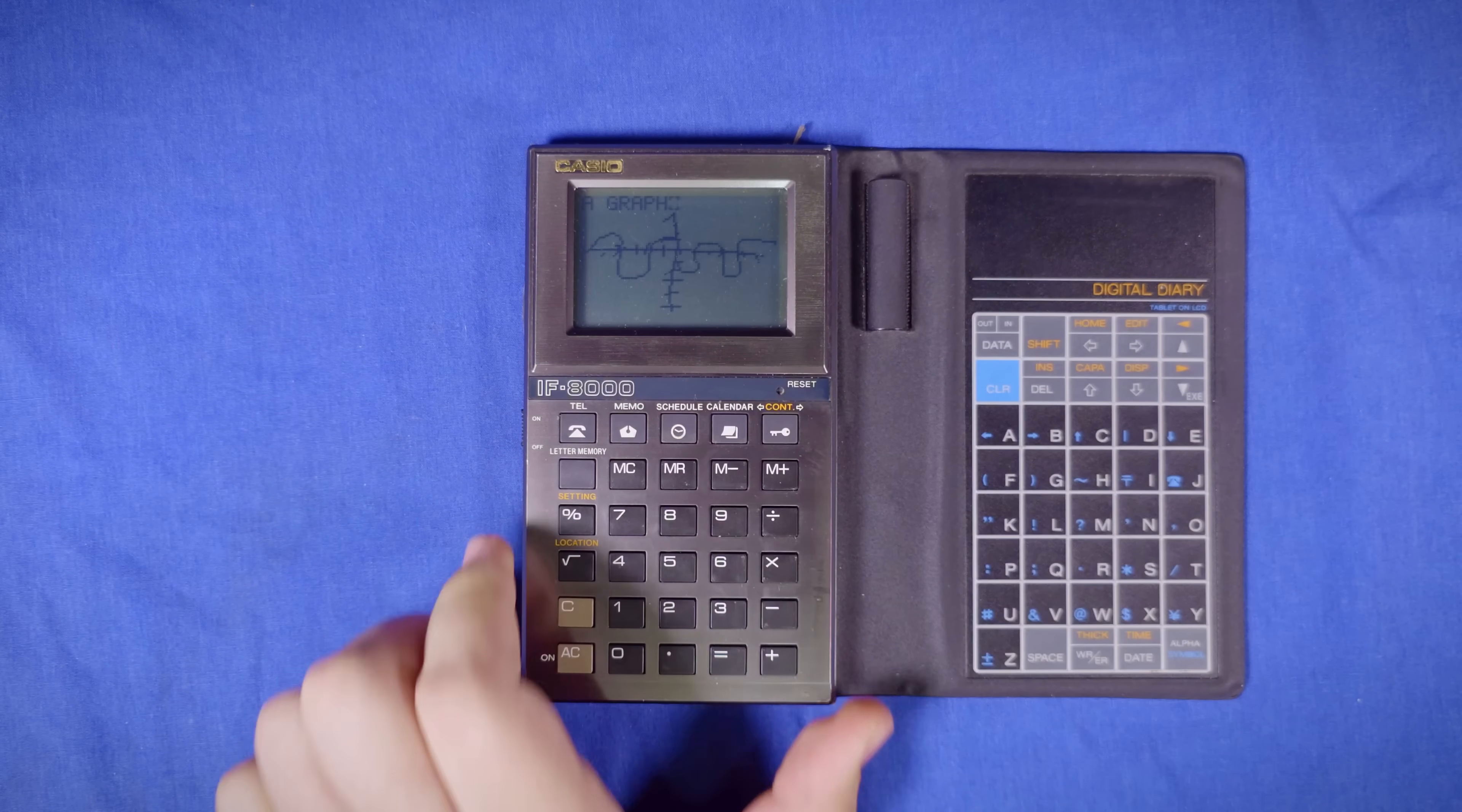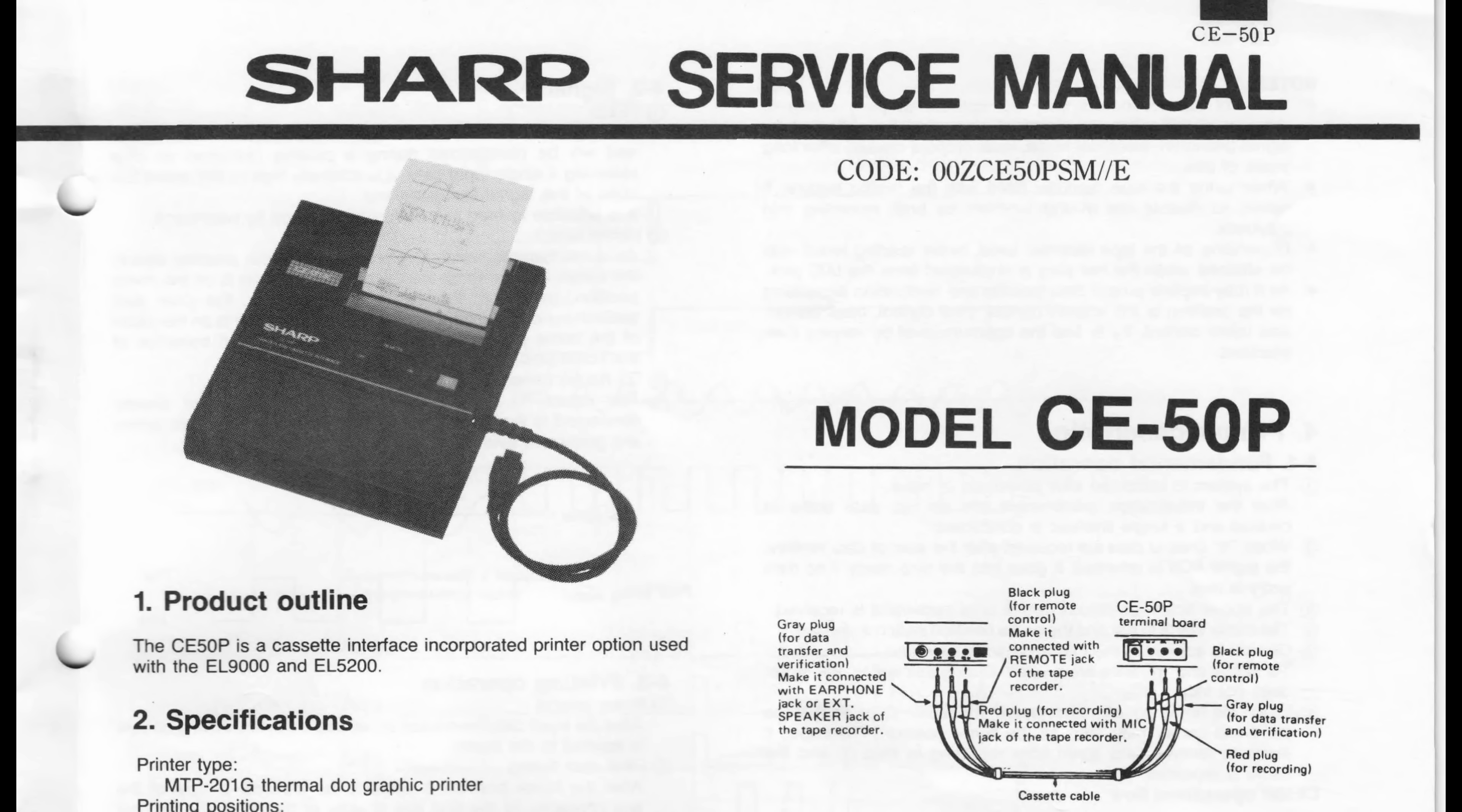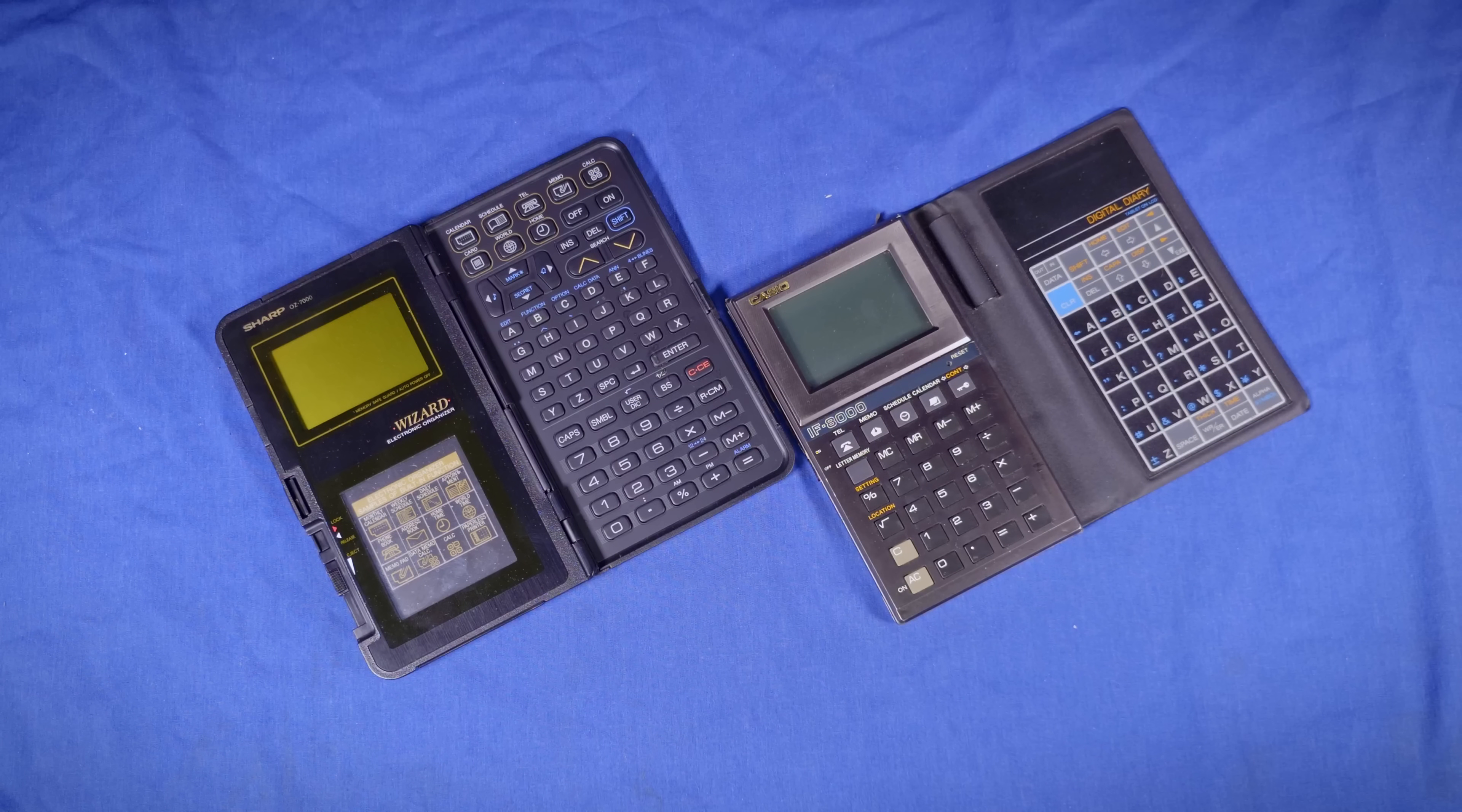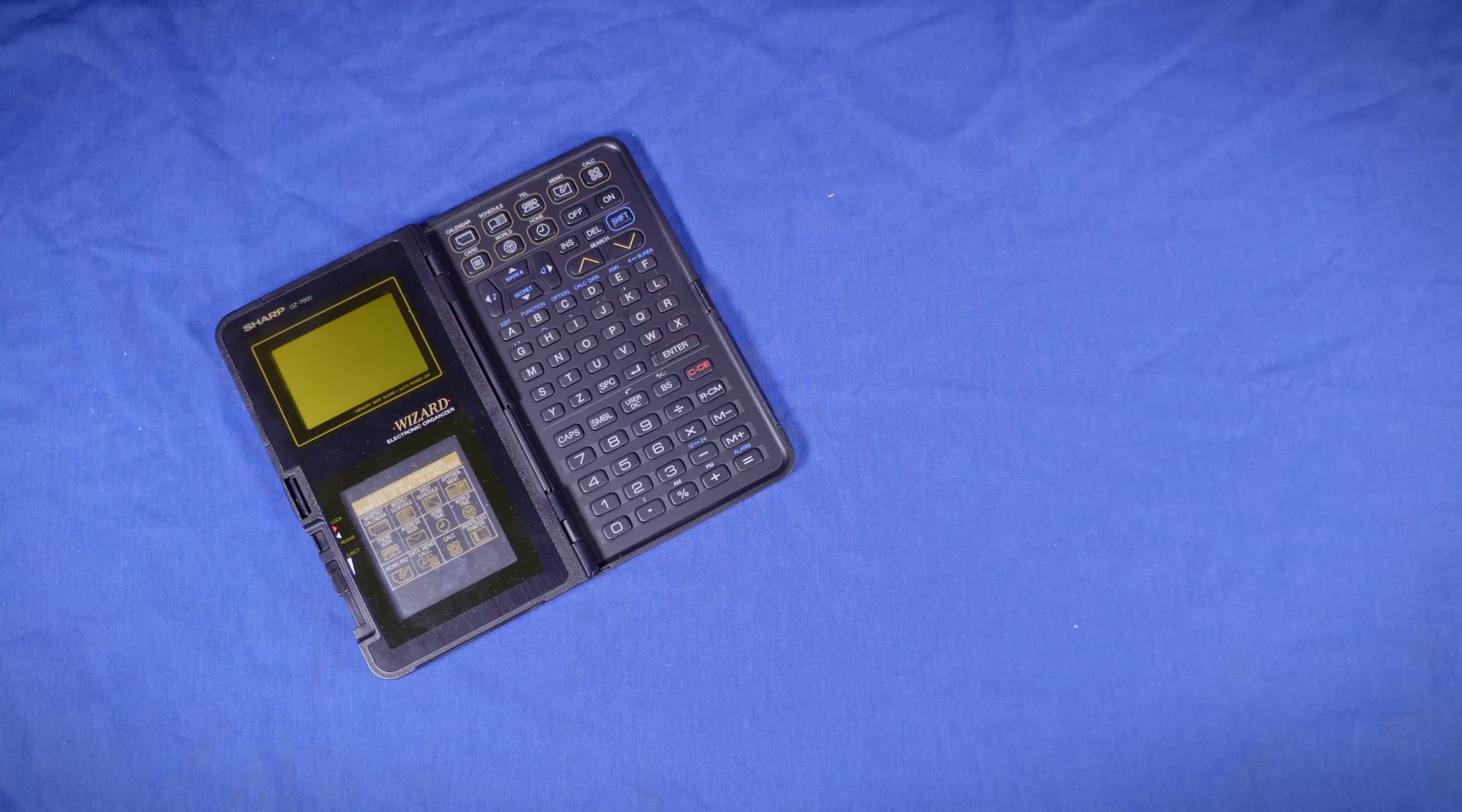By contrast, the Sharp Wizard had different software packs, a PC connection interface for exchanging notes and updating contacts, portable printers for making instant hard copies of things, and much more. It's in a whole other league of functionality, and you got all of those options for only $250 compared to $180 for the IF8000. It's kind of a no-brainer that the IF8000 isn't as well known because I bet almost no one bought one.